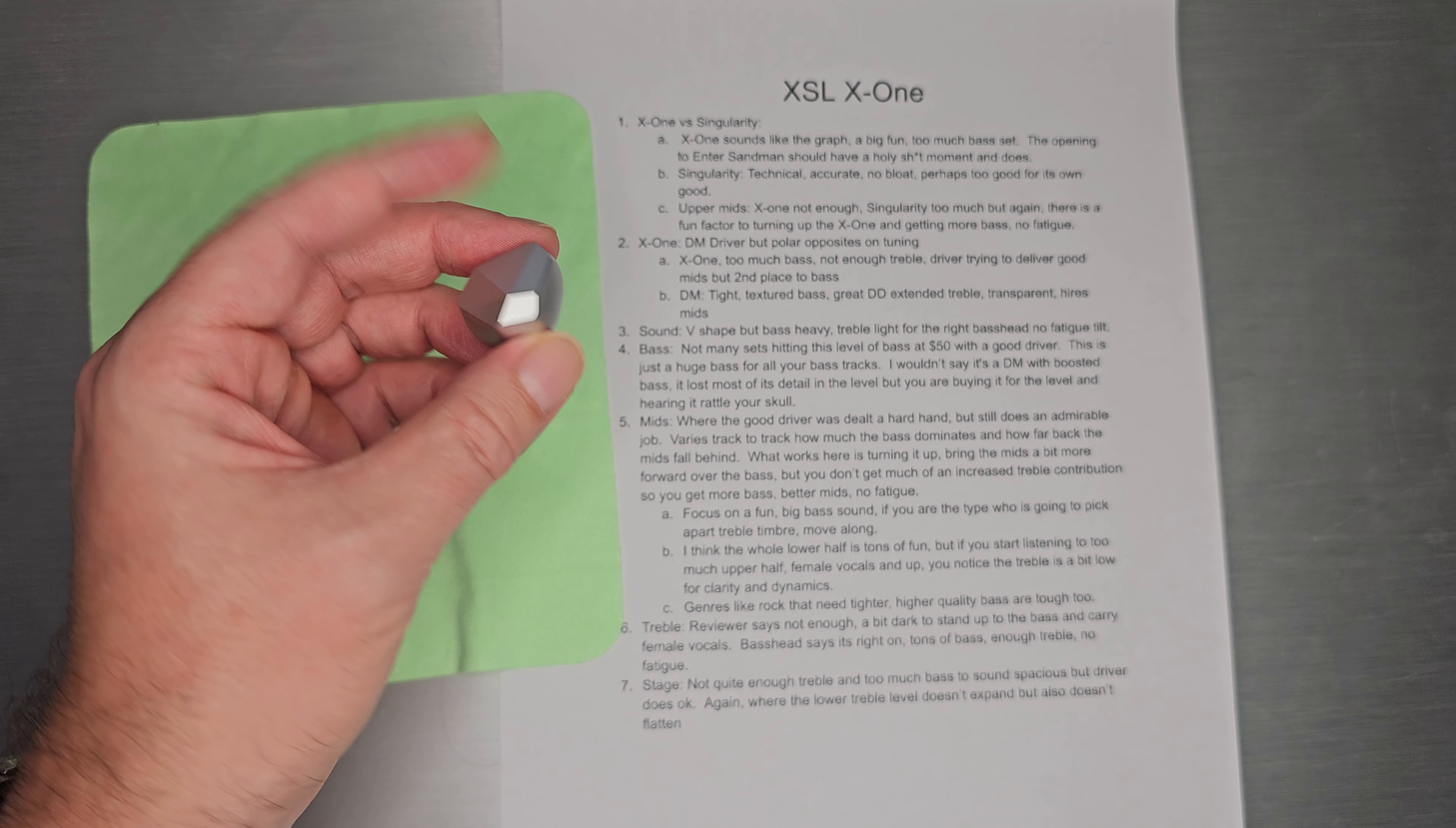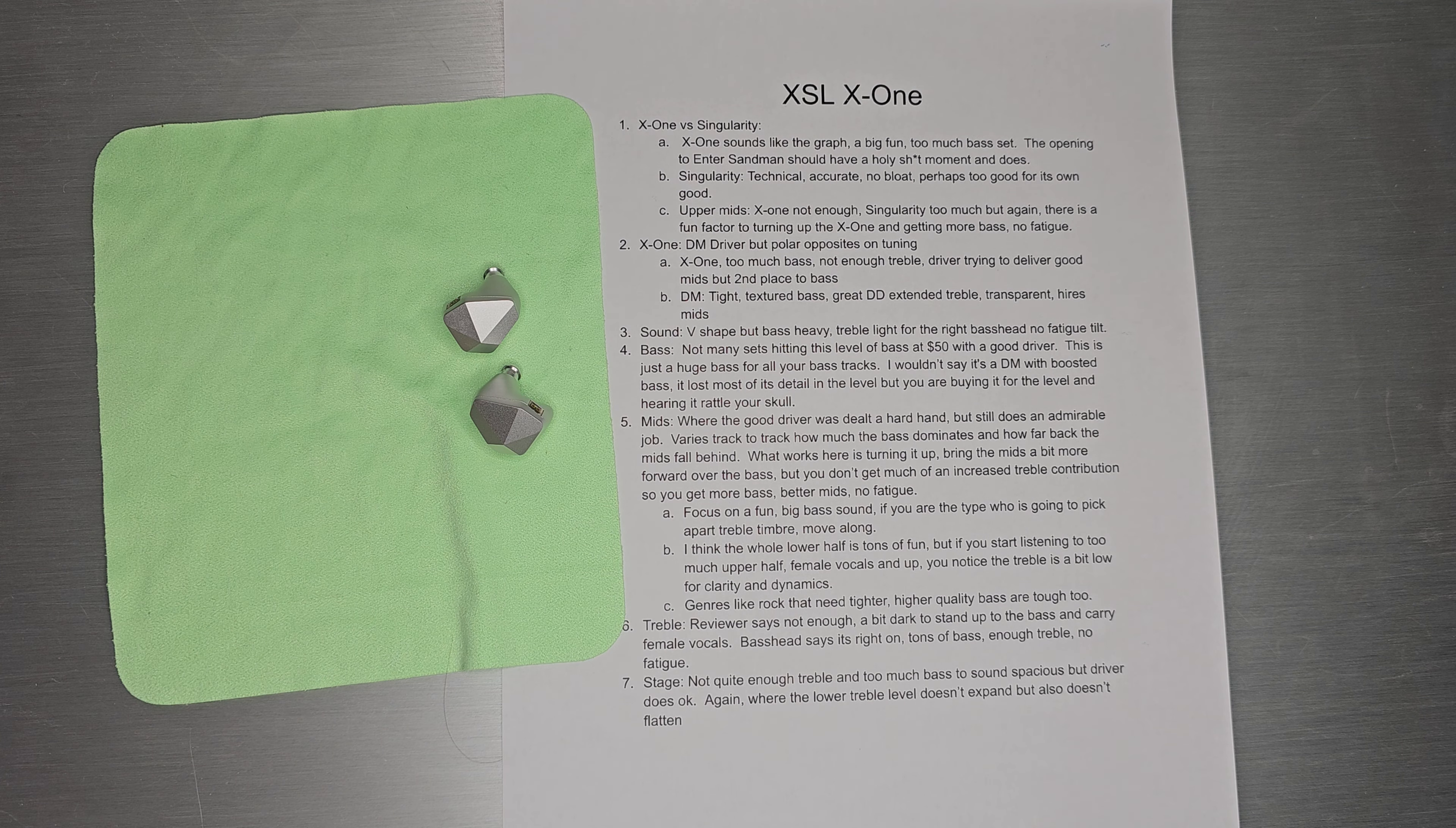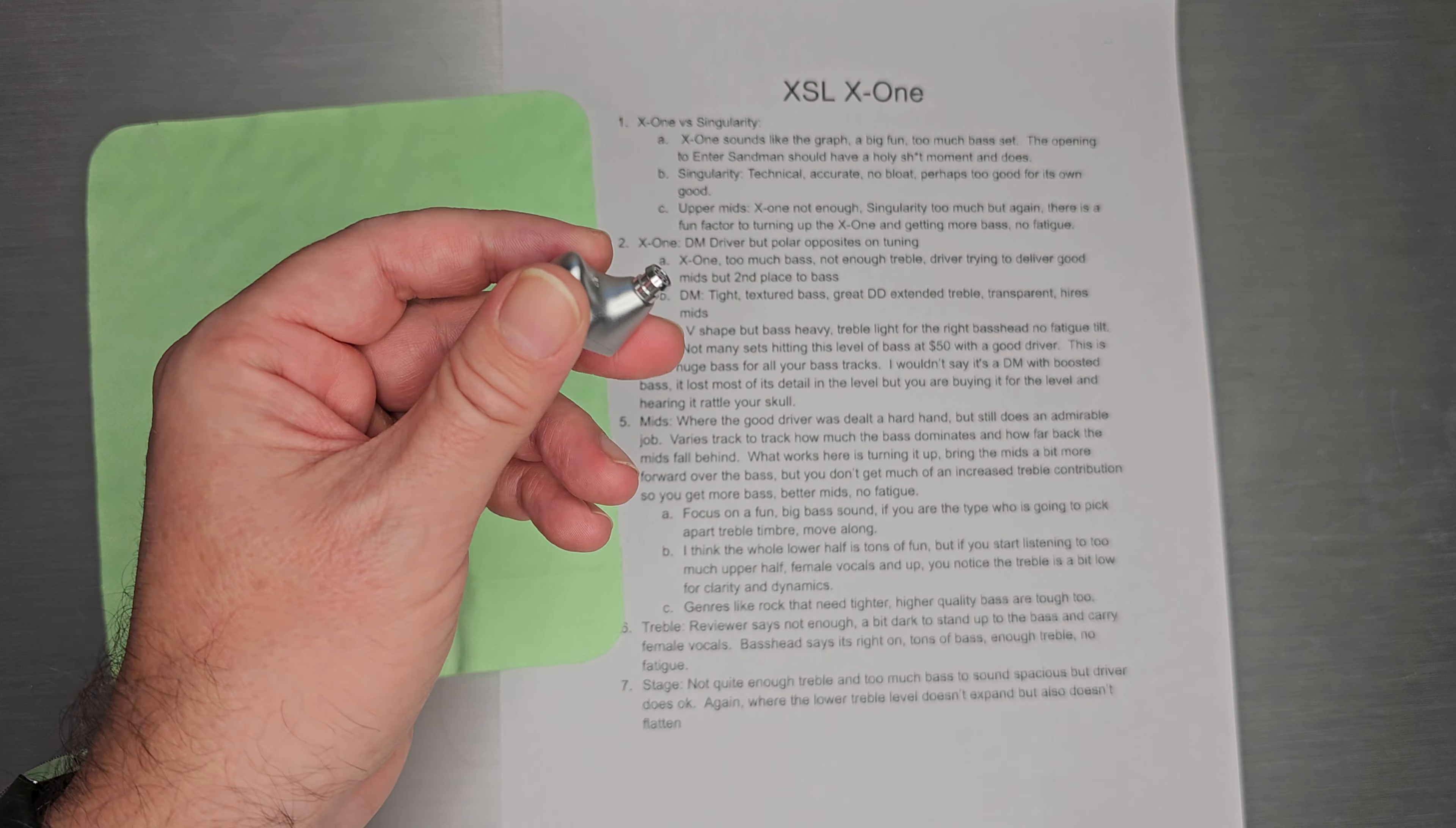So sound, as we just looked at - huge V shape, bass heavy, treble light for the bass heads, no fatigue at all. It really has the bass head tilt down pretty well. Bass - there's just not many sets at $50 that have a good driver and hit the bass level that this one does. It's just a huge bass for all of your bass tracks.